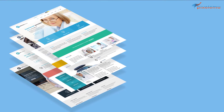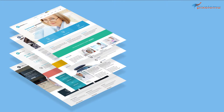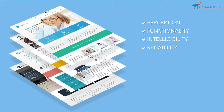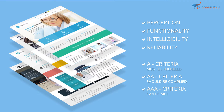The Principles of Availability Document V.2.0 has been divided into four groups: Perception, Functionality, Intelligibility, and Reliability, and three levels of availability. A criteria must be fulfilled. AA criteria should be complied. AAA criteria can be met.